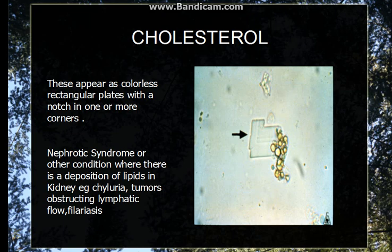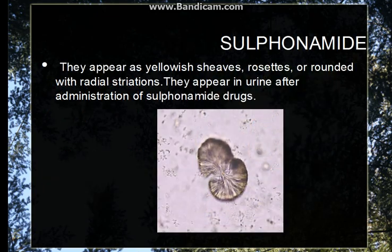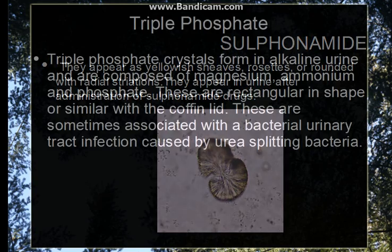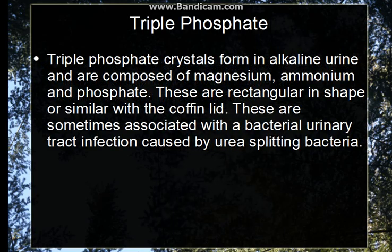Cholesterol crystals can also be seen along with oval fat bodies. There are also sulfonamide crystals — you can see here the typical shape of a sulfonamide crystal. It is seen normally after administration of sulfonamide antibiotics. Now going to crystals present in alkaline urine.